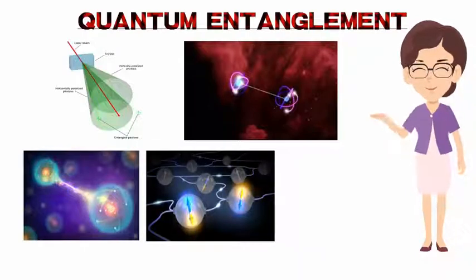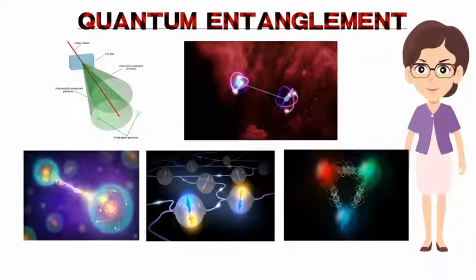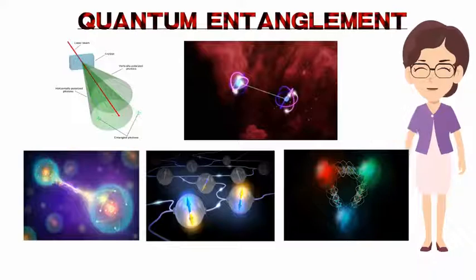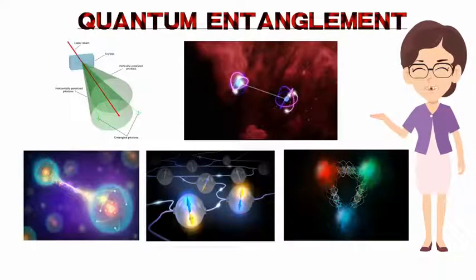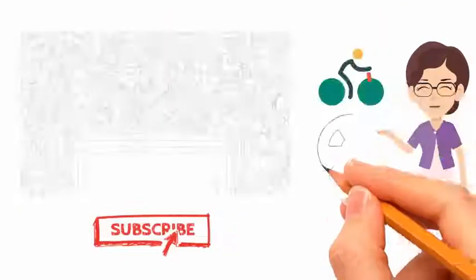However, this behavior gives rise to seemingly paradoxical effects. Any measurement of a property of a particle performs an irreversible collapse on that particle and will change the original quantum state. In the case of entangled particles, such a measurement will be on the entangled system as a whole.